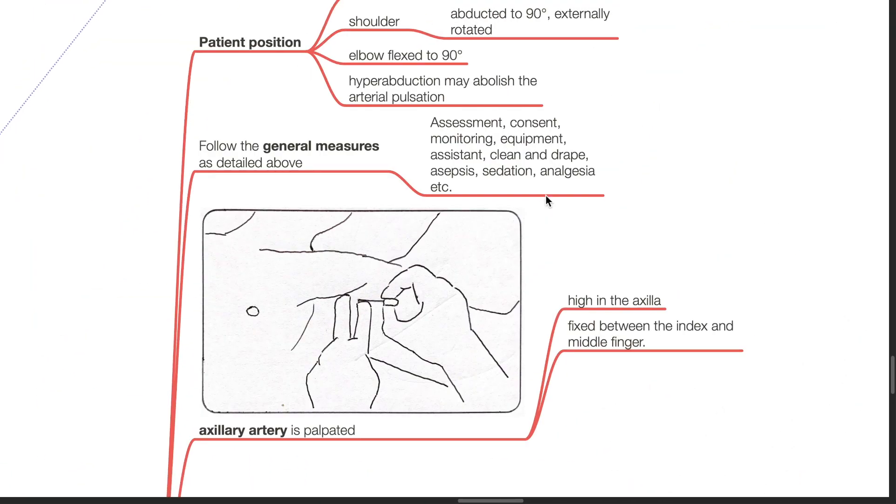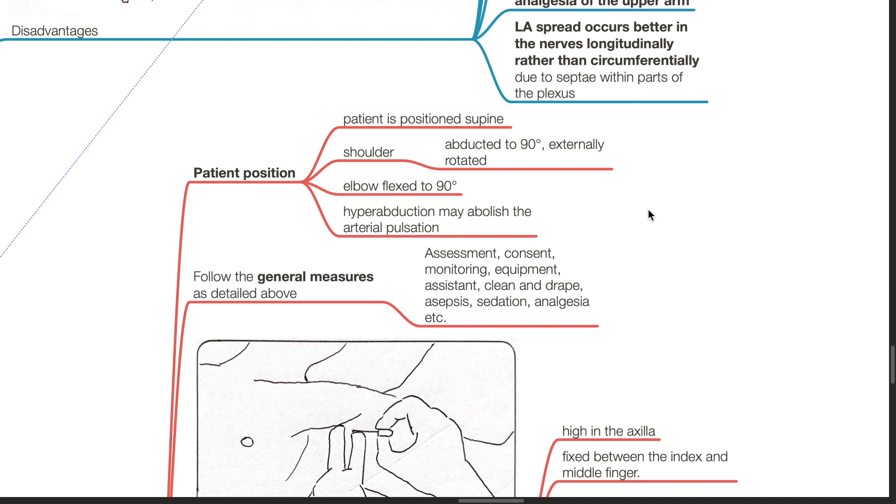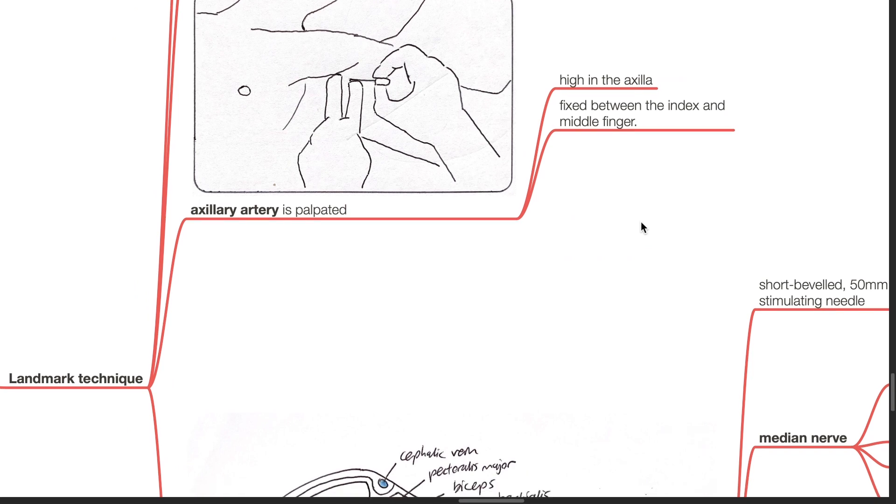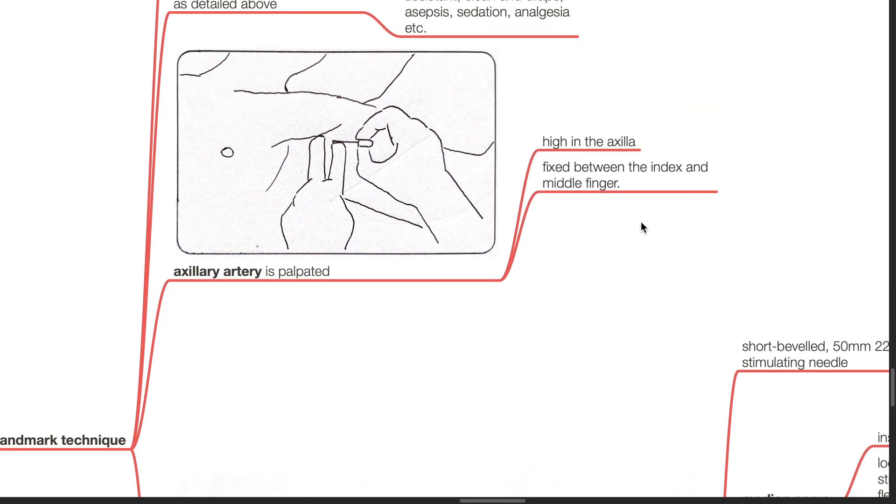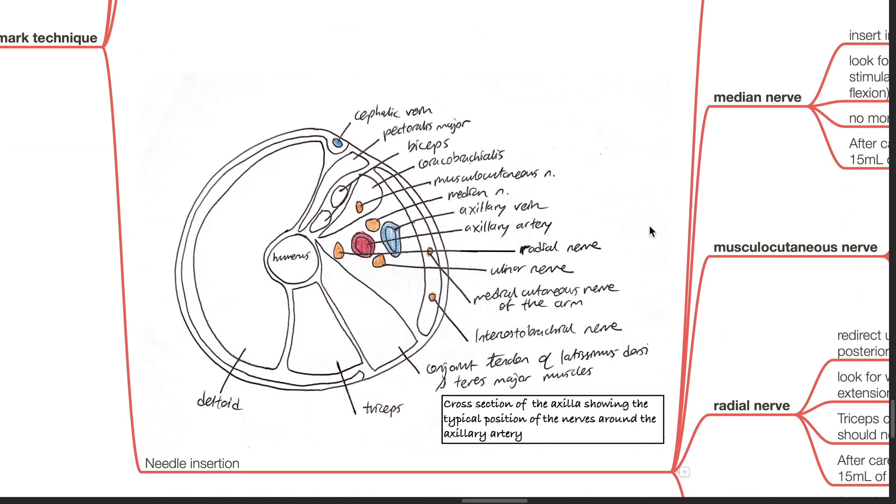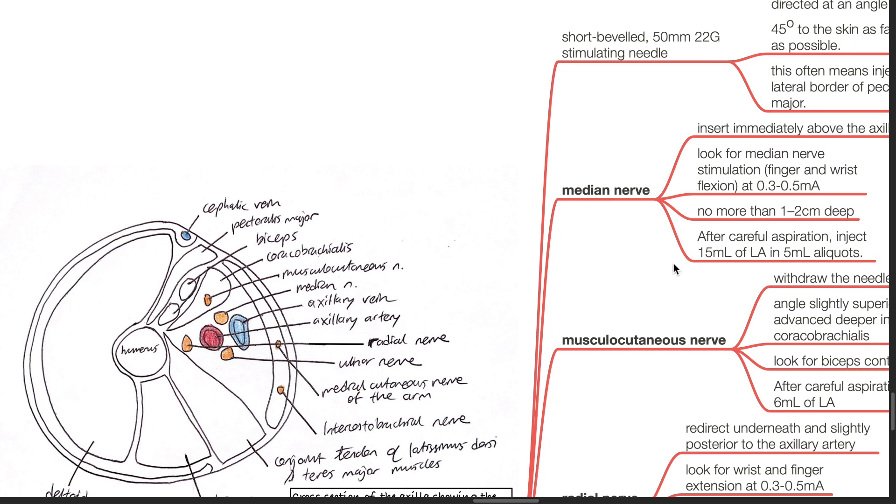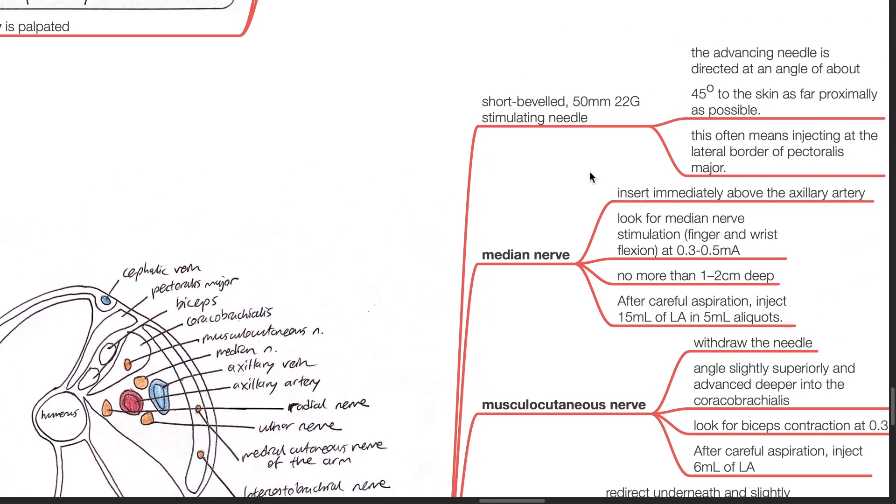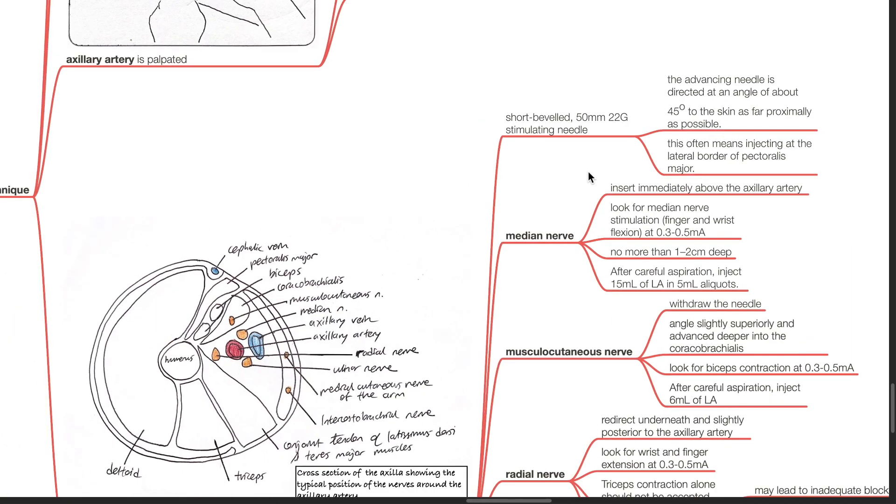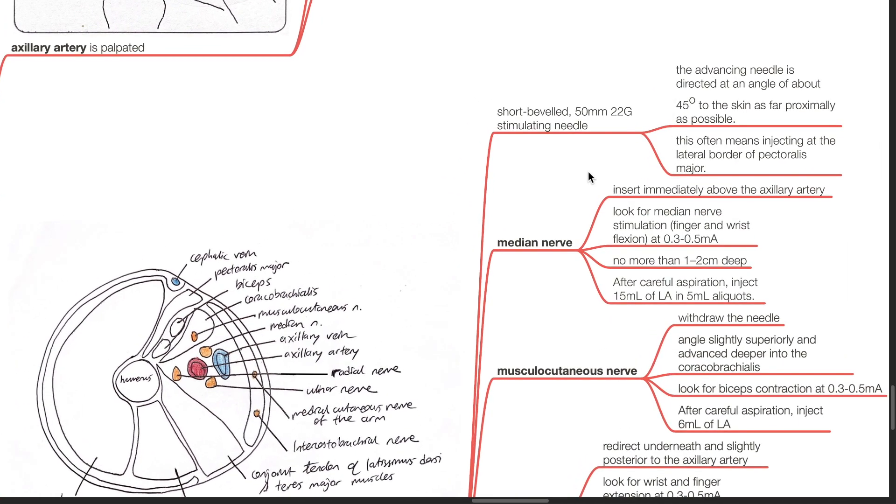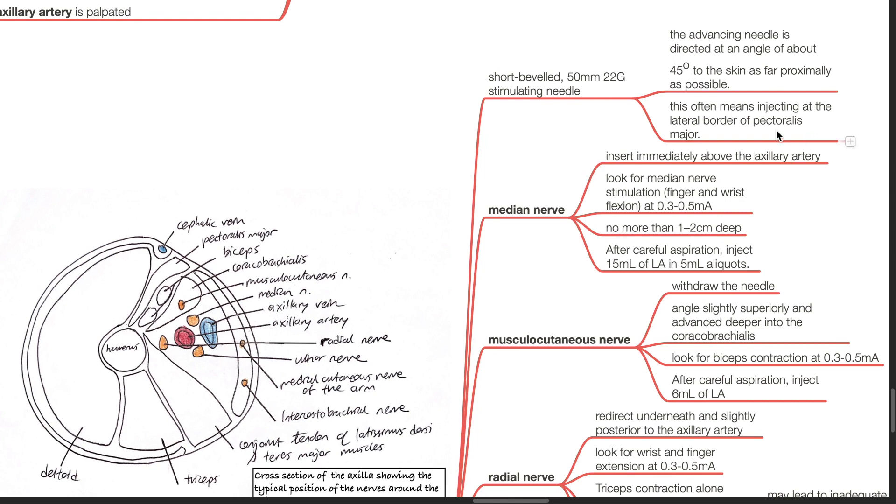Landmark technique. Patient position: the patient should be supine, the shoulder abducted to 90 degrees and externally rotated, the elbow flexed to 90 degrees. Hyperabduction may abolish the arterial pulsation. Follow the general measures as detailed above. Axillary artery is palpated high in the axilla and fixed between the index and middle finger. Needle insertion: a short beveled 50mm 22 gauge stimulating needle should be used. The advancing needle is directed at an angle of about 45 degrees to the skin as far proximally as possible. This often means injecting at the lateral border of the pectoralis major.